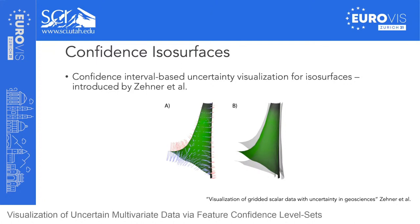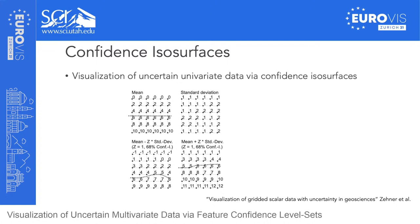To understand how confidence isosurfaces are computed, consider a notional example with four six-by-six grids. The top row shows the mean and standard deviation values at each grid point for a single attribute, using an iso value of five. For a given confidence interval — in this case 68 percent — you can use the z-score to compute the lower and upper bounds for each grid point. Generating iso lines using these lower and upper bound values gives an envelope around the median iso line.